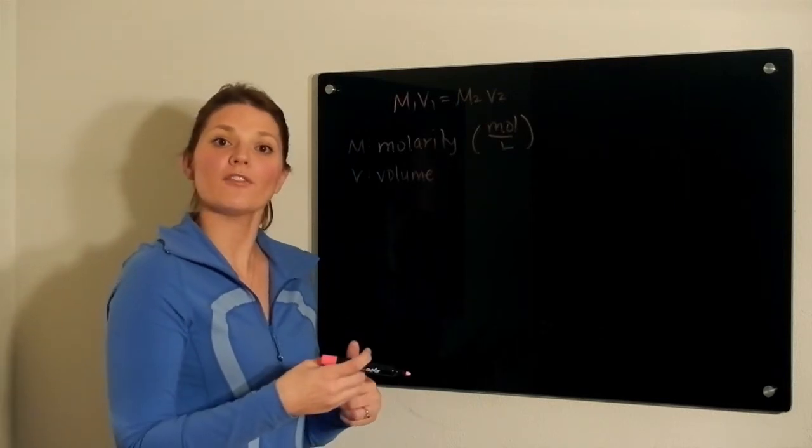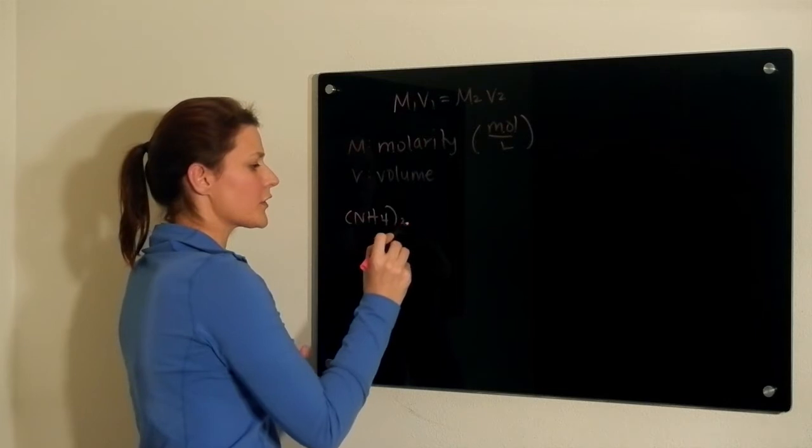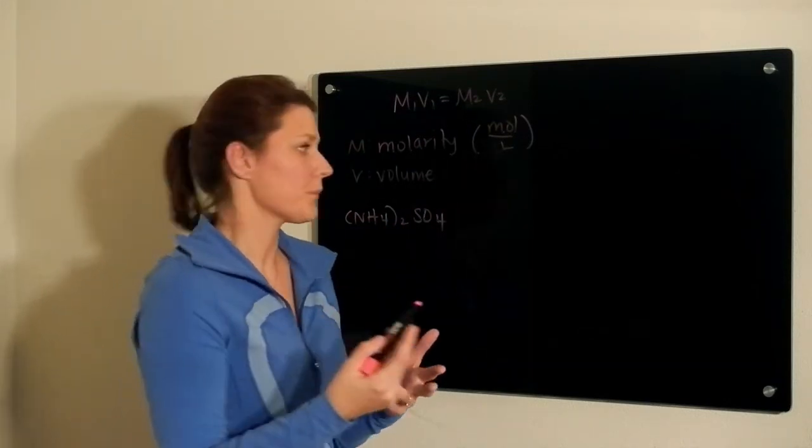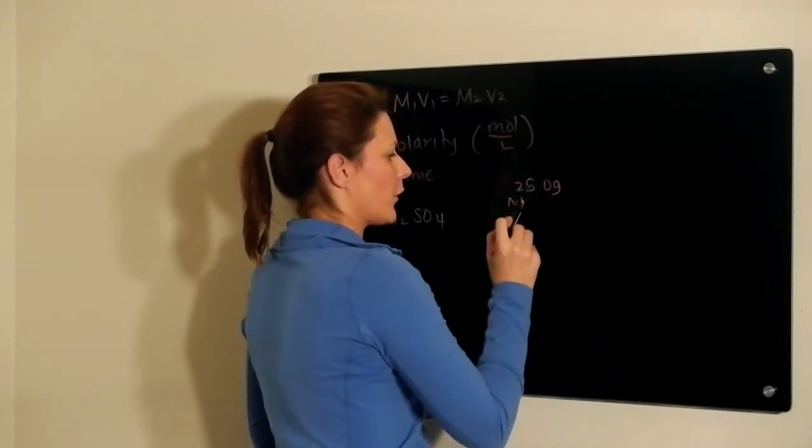In the question laid before us, we are taking a sample of ammonium sulfate and dissolving that into water. In the question we're told that we have 25 grams of our ammonium sulfate.